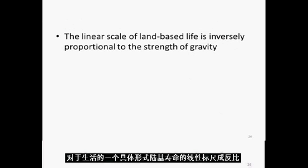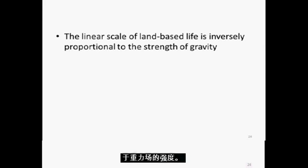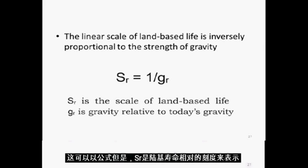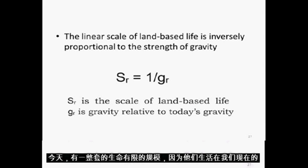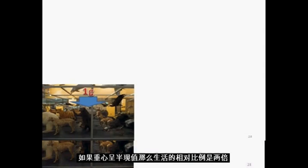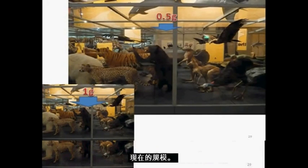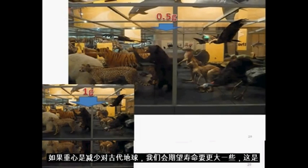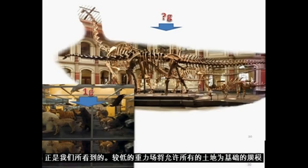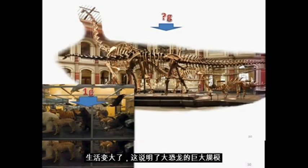For a particular form of life, the linear scale of land-based life is inversely proportional to the strength of the gravitational field. This can be represented in a formula where SR is the scale of land-based life relative to today's land-based life and GR is gravity relative to today's gravity. Today there is a whole range of life limited in scale because they live in our present gravity. If gravity was half its present value, then the relative scale of life would be twice its present size. If gravity was less on the ancient Earth, we would expect life to be larger — and this is exactly what we see. A lower gravitational field would allow the scale of all land-based life to become larger, illustrating how the immense size of the largest dinosaurs would have been a natural result of a reduced surface gravity on the ancient Earth.